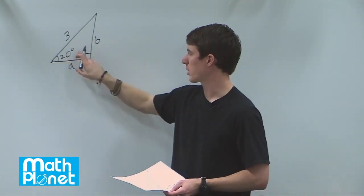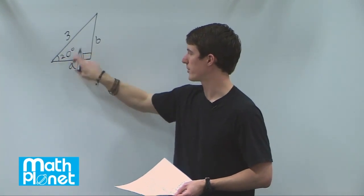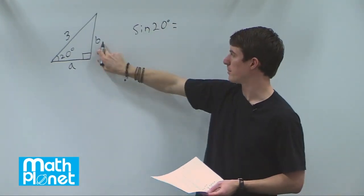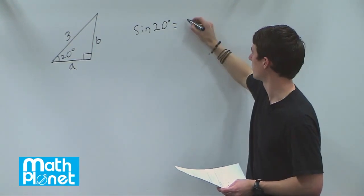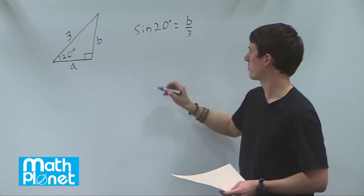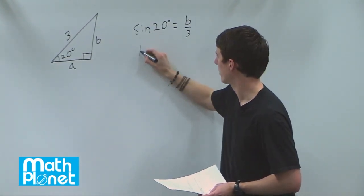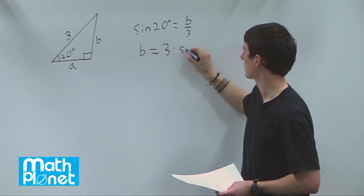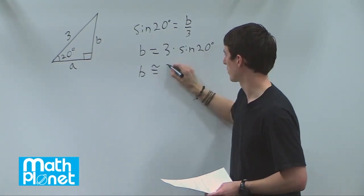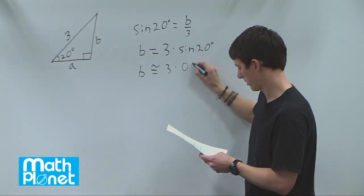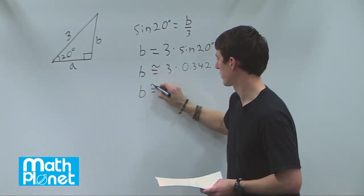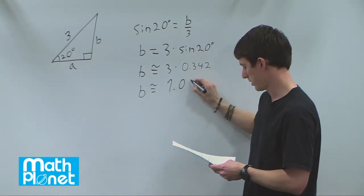We're going to use the cosine and sine trigonometric functions of 20 degrees. Sine of 20 degrees gives us opposite over hypotenuse, which is B over 3. To solve for B, we multiply both sides by 3, so B equals 3 times sine of 20. That gives us B approximately equal to 3 times 0.342, so B is approximately 1.026.